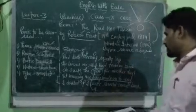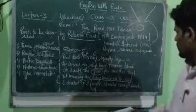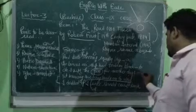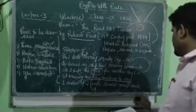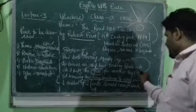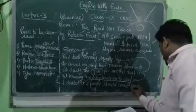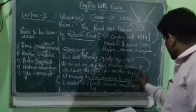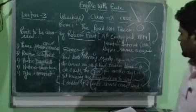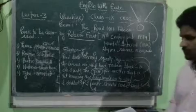The rhyme scheme of stanza three: 'lay' (A), 'black' (B), 'day' (A), 'way' (A), 'back' (B) — giving the rhyme scheme A, B, A, A, B, consistent with the previous stanzas.